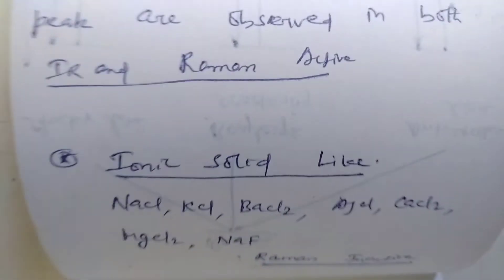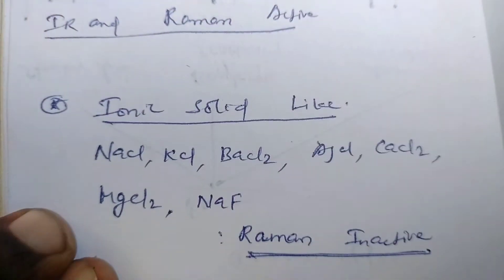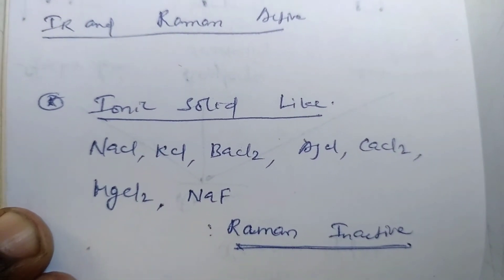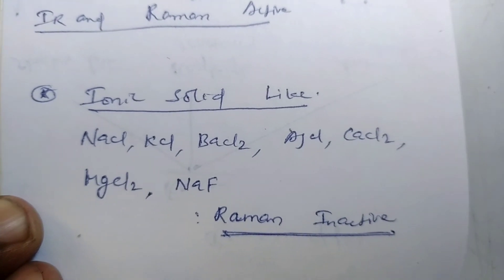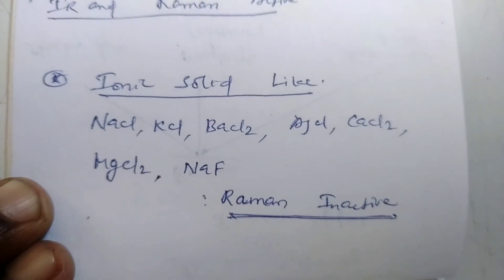Ionic solids like sodium chloride, potassium chloride, barium chloride, silver chloride, calcium chloride, magnesium chloride, and sodium fluoride are Raman inactive.